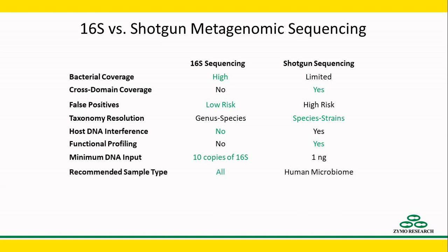The wide variety of environments represented in the 16S databases allow it to be useful for all sample types, while shotgun metagenomic sequencing is best for human-derived samples. And finally, cost per sample: 16S sequencing can be performed for about $80 per sample.